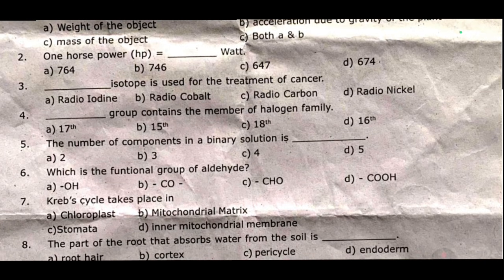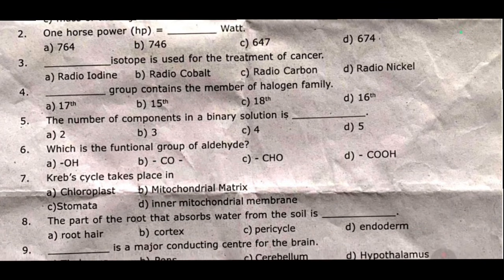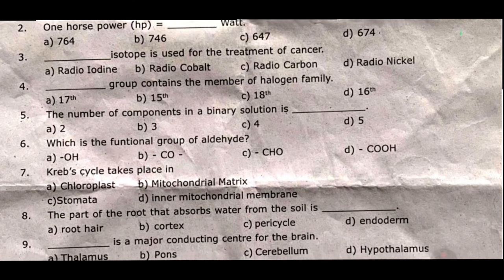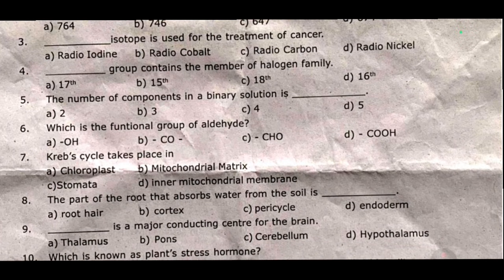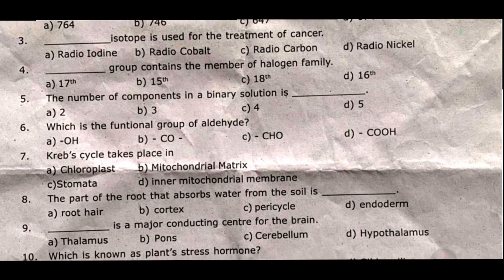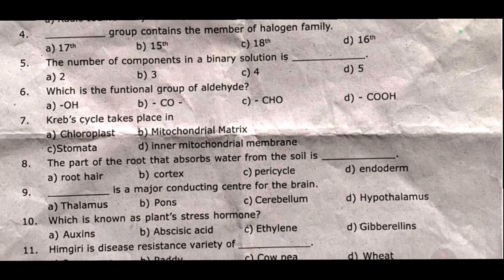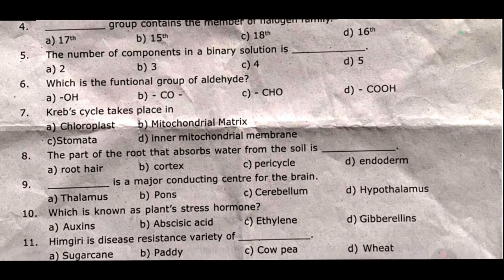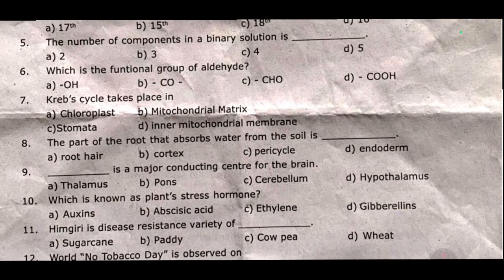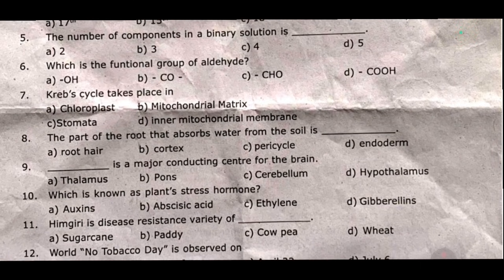Sixth one: which is the functional group of aldehyde? Seventh one: Krebs cycle takes place in dash. Eighth one: the part of the root that absorbs water from the soil is dash. Ninth one: dash is a major conducting center for the brain. Tenth one: which is known as the plant's stress hormone?